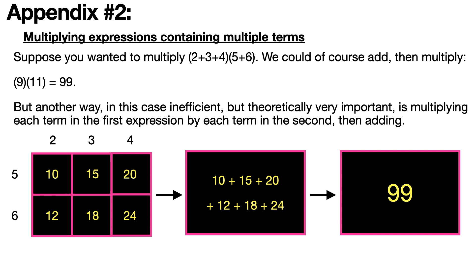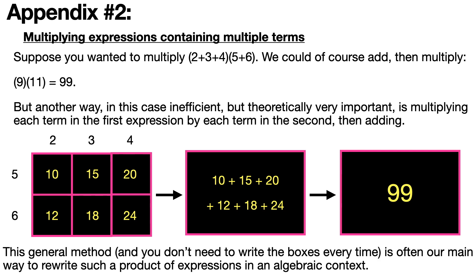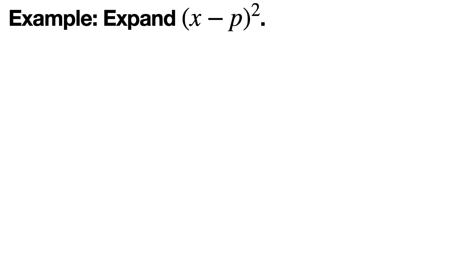Why would anyone do it this way? For numbers, there's no point except to understand. But in terms of algebra, sometimes this is the only thing you can do to simplify something, and it was needed for the example we did for the parabola. Let's look at an algebraic example. What if someone said expand x minus p squared? Try the box method that we just debuted, but apply it to this.